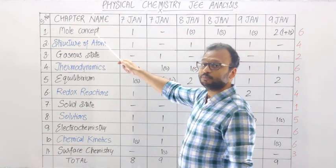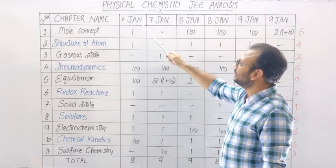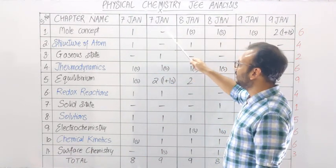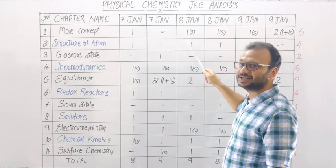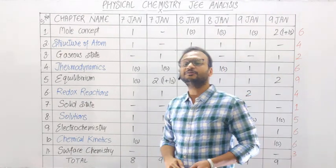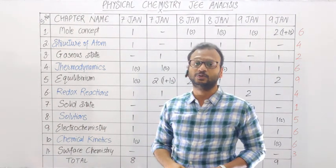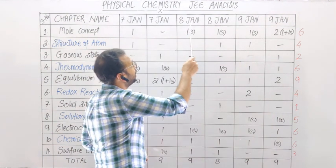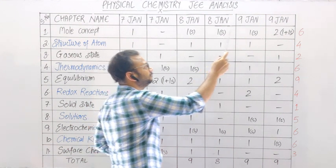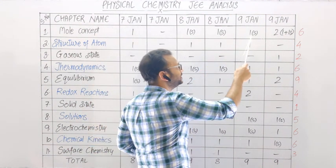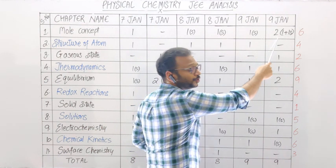The most basic chapter is Mole Concept. In January morning shift there was a question; in the evening shift there was no question. In January there was one question — 'S' means subjective, where I have written 'S' it means a subjective question. That is the numerical type of problem which has been included this year. After that, in January there was one question in the morning and another in the evening, and one was subjective; in January there were two questions.